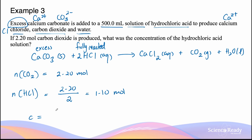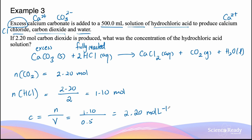Concentration equals moles divided by volume. The moles of HCl is 1.10 moles divided by the volume of 500 milliliters, which is 0.5 liters. This gives an answer of 2.20 moles per liter. The number 2.20 has three significant figures, so the final answer is also given to three significant figures.